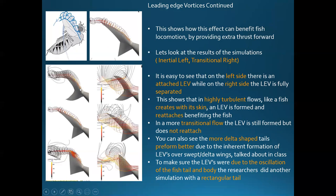In the inertial regime, the leading edge vortex stays attached in all three tail designs, so the fish gains some benefit from it. You can also see that the more delta-shaped the tail, the better it performs. In the transitional regime, these delta-shaped tails are trying to form the leading edge vortex and make it reattach, though it's still separating — while the less delta-shaped tail is not doing a good job at all. Since fish like to make turbulent flow with their skin in the inertial regime, this may be a common occurrence.